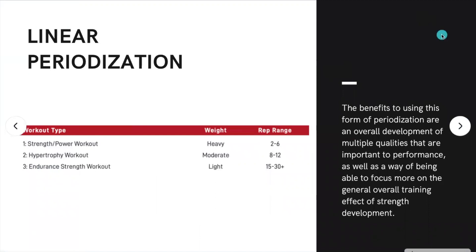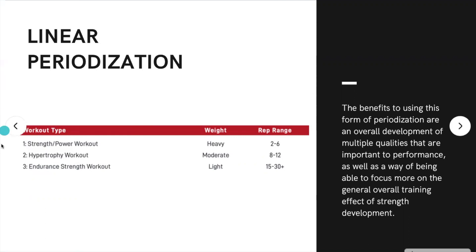An example of periodization is linear periodization, which I'm going to bring here as an example because it's the easiest to understand and also one of the most used. Linear periodization has three or even four phases. Phase one is the strength-power workout, where we're using heavy weights for a low rep range — two to six reps — to maximize strength and power gain.